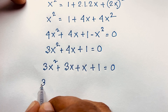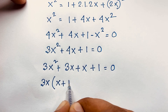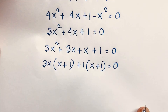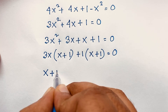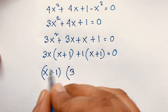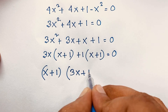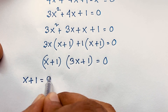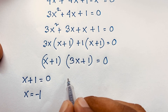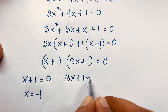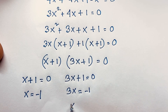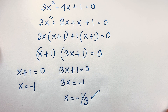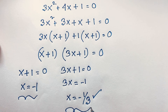Now you can see here 3x is common, so it will be 3x(x + 1), and here 1 is common, giving (x + 1) is equal to 0. Now (x + 1) is common, so taking it out we get (x + 1)(3x + 1) = 0. So we find two cases: first case x + 1 = 0, giving x = negative 1, and second case 3x + 1 = 0, giving x = negative 1 over 3. So we find two solutions: x = -1 and x = -1/3.